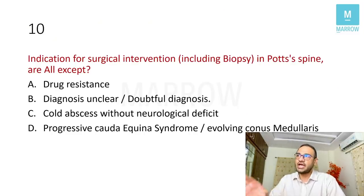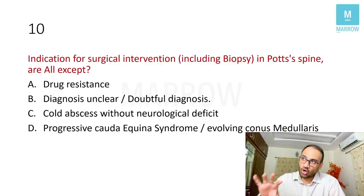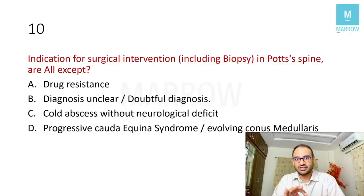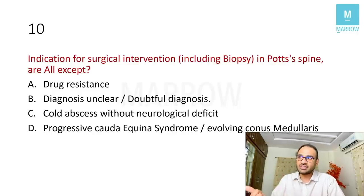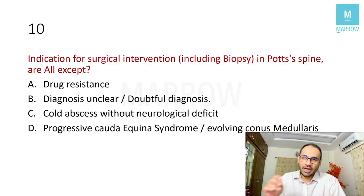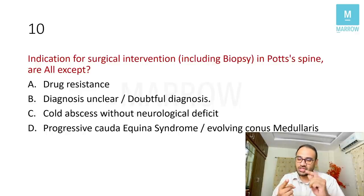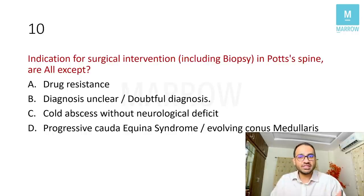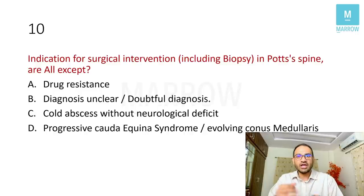The last question: indications for surgical intervention including biopsy in Pott's spine or TB spine are all except. You need to know the indications for intervention or surgery in TB spine. If there is spinal cord involvement or bowel and bladder involvement, those are emergencies regardless of the cause — trauma, infection, TB, or tumor. You have to intervene surgically. So option D (progressive cauda equina syndrome) is clearly an indication.